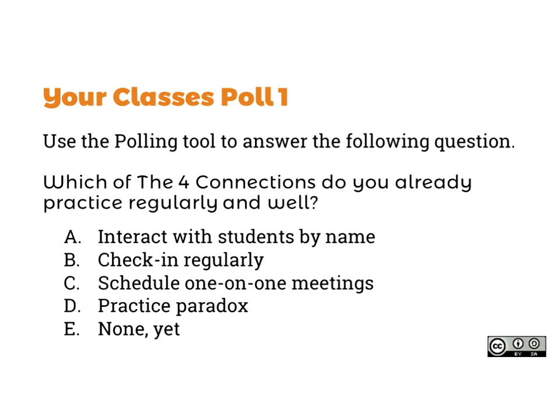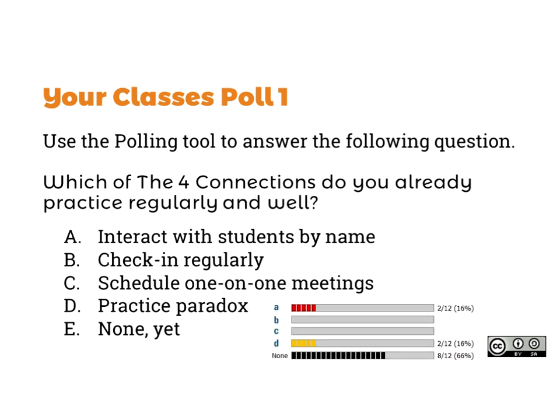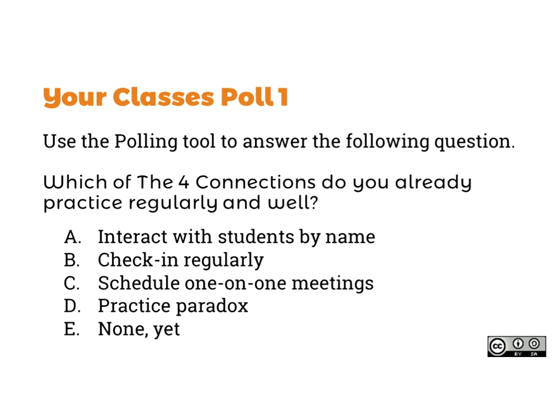Just to wrap up, I have two polling questions. First: which of the four connections do you already practice regularly and well? You do have to pick one — sorry, I should have said 'all of the above.' It looks like interacting with students by name and practicing paradox are most common. Typically I hear that a lot of people are doing A, B, and D — three of the four — and that scheduling the one-on-one meetings is something new for most people. One-on-one meetings are hugely successful, but make sure they're really focused: have a question you ask students in advance, or have students think of something to discuss, and schedule just 10 or 15 minutes to start with.